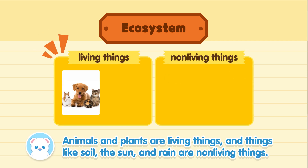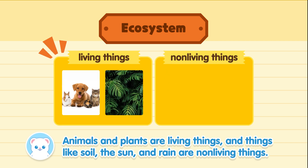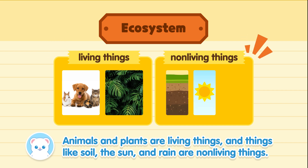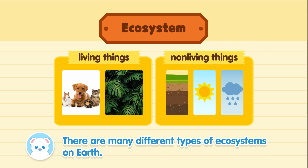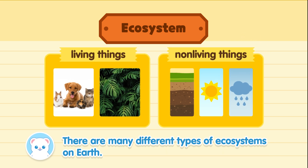Animals and plants are living things, and things like soil, the sun, and rain are non-living things. There are many different types of ecosystems on Earth.